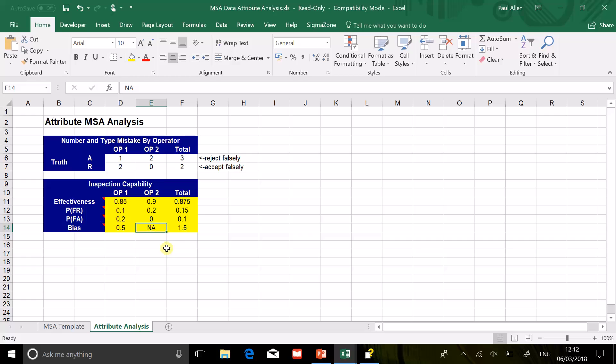Operator two you'll notice doesn't have any bias - that's because they didn't make any false acceptance mistakes, so we can't divide by zero in that case. The other operator though, their bias is less than one. So although overall the bias for the system is above one - we're too tight - actually this individual operator is too loose. What we want to do is, although we've got good results, we'd want to give this operator some extra training to tighten their standards up and make sure that we're too tight, keeping the problems on site. Here are the mistakes they made - operator one made one false reject and two false accepts.